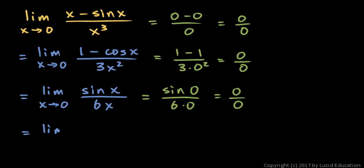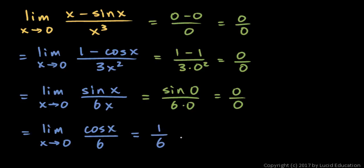This will be the limit as x approaches 0 of the derivative of the numerator, which will be cos x, over the derivative of the denominator, which will be 6. We can evaluate this with a substitution: putting in 0 for x, we get cos of 0, which is 1, and the denominator is 6. So 1/6 is the limit of the original function as x approaches 0.